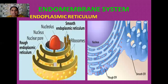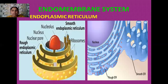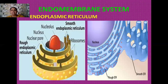In the rough endoplasmic reticulum, ribosomes are present and these ribosomes play an important role in the process of protein synthesis, also known as translation. That's why ribosomes are called protein factories. The smooth endoplasmic reticulum does not have any ribosomes but is involved in the process of secretion and the synthesis of lipids or fats, as well as proteins.